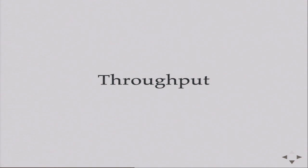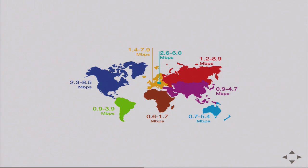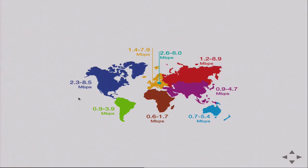Another consideration is throughput. There is a great report from Akamai, a really big CDN, that comes out about every three months. I've aggregated that data into a map. When I start a new project, I need to ask my client where the users will potentially be. If it's in Poland, it's okay to focus only on those numbers. If it's worldwide, we have to look at the minimal throughput.